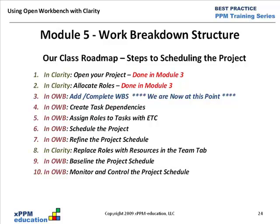Item one is where we open the project — we begin by opening the project in Clarity, and that was done in Module 3. Then item two, in Clarity, we allocate roles as part of the project team, and we also did that in Module 3. Next, in Open Workbench, we're ready to build, add, and complete the work breakdown structure, and that's the module we're at now.